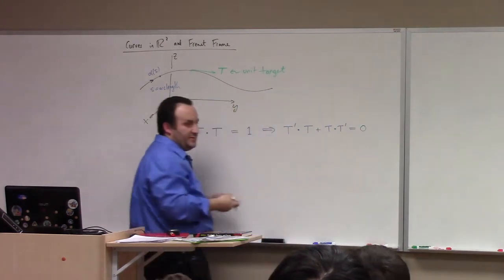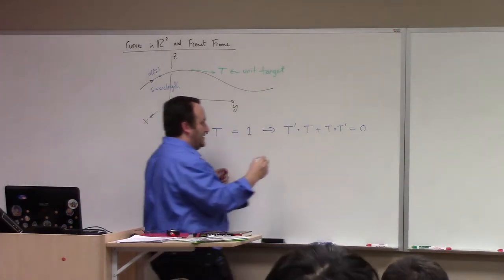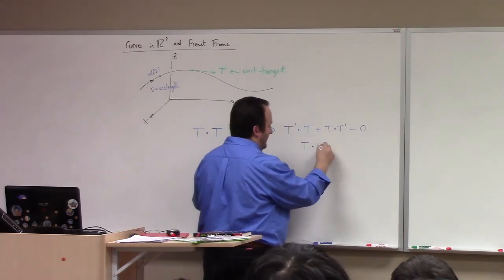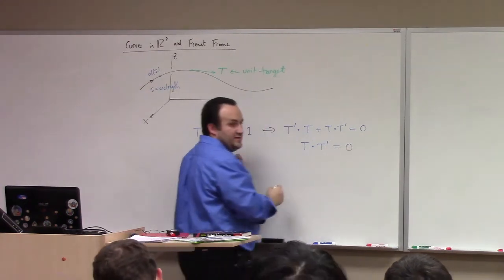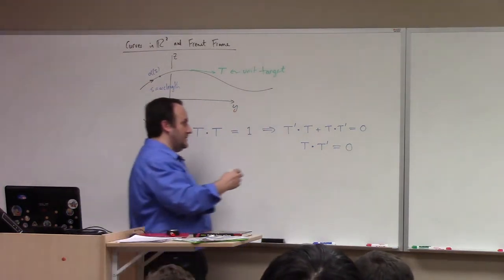So, I'm thinking of this as being a unit speed curve, just for the sake of me not forgetting various factors. And so the dot product of T with T is 1, right? What happens if we differentiate that? I'm differentiating with respect to arc length, of course.